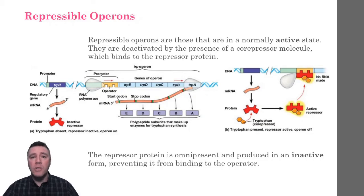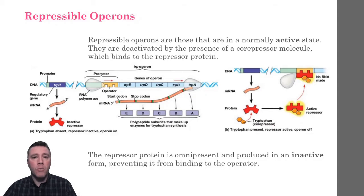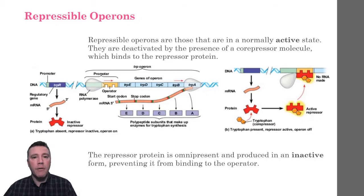This ensures that the bacterial cell doesn't waste raw materials and produce more tryptophan than necessary. But as the cell uses its supply of tryptophan, and because the binding of tryptophan to the repressor protein is reversible, once the concentration of the amino acid reaches a sufficiently low level, there isn't enough of it to bind to the repressor proteins. The repressor protein reassumes its inactive conformation, and the production of tryptophan resumes.